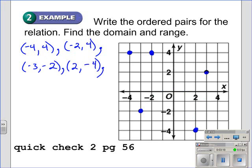And this last point, to the right three, and up two. So that will give us (3, 2). When we write a relation as a set of ordered pairs, we should enclose the ordered pairs in a set of brackets.